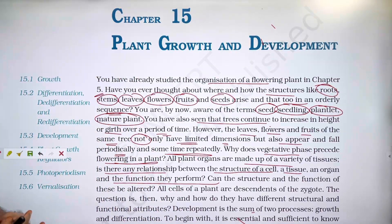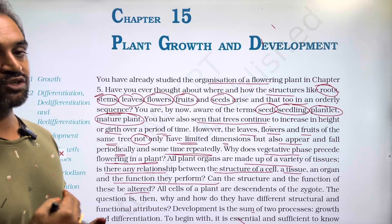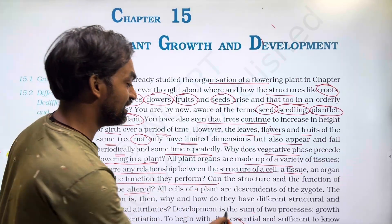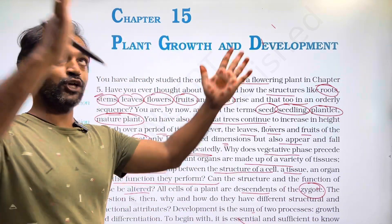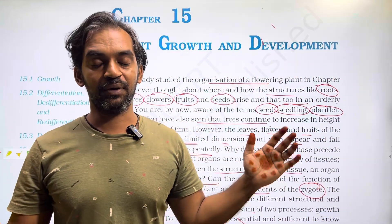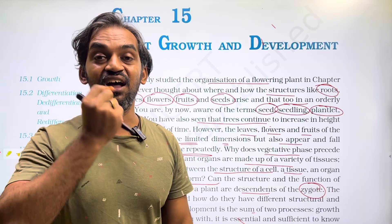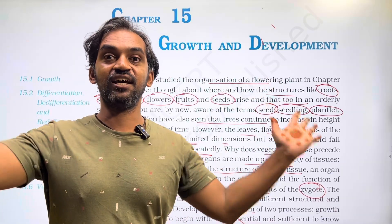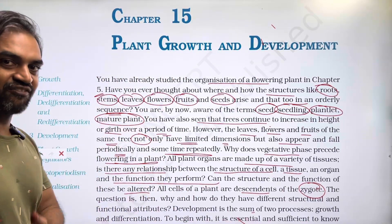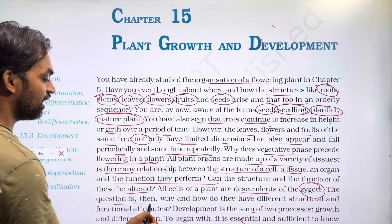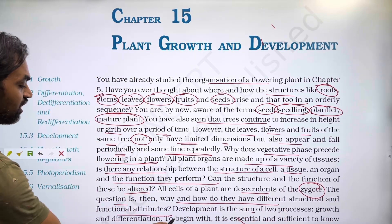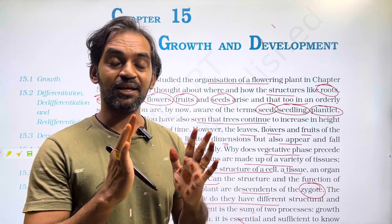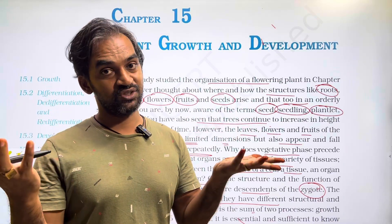Can the structure and function of these be altered? Yes, it can be done. All cells of the plant are descendants of the zygote. Then why and how do they have different structural and functional attributes? One single zygote cell gives rise to root — for fixation and absorption — stem for conduction and mechanical support, and leaf for photosynthesis and exchange of gases.